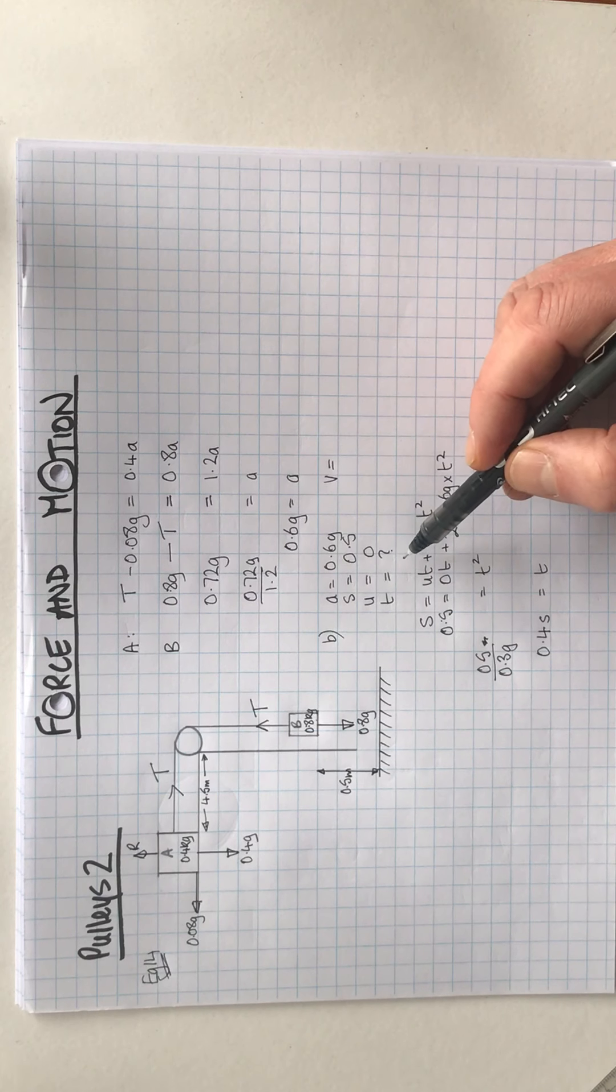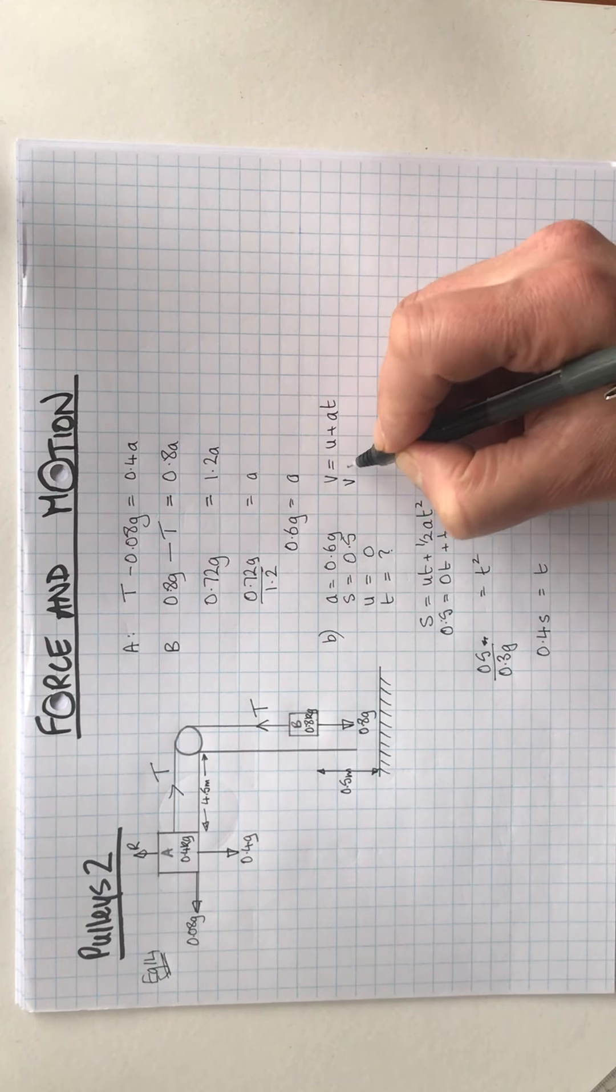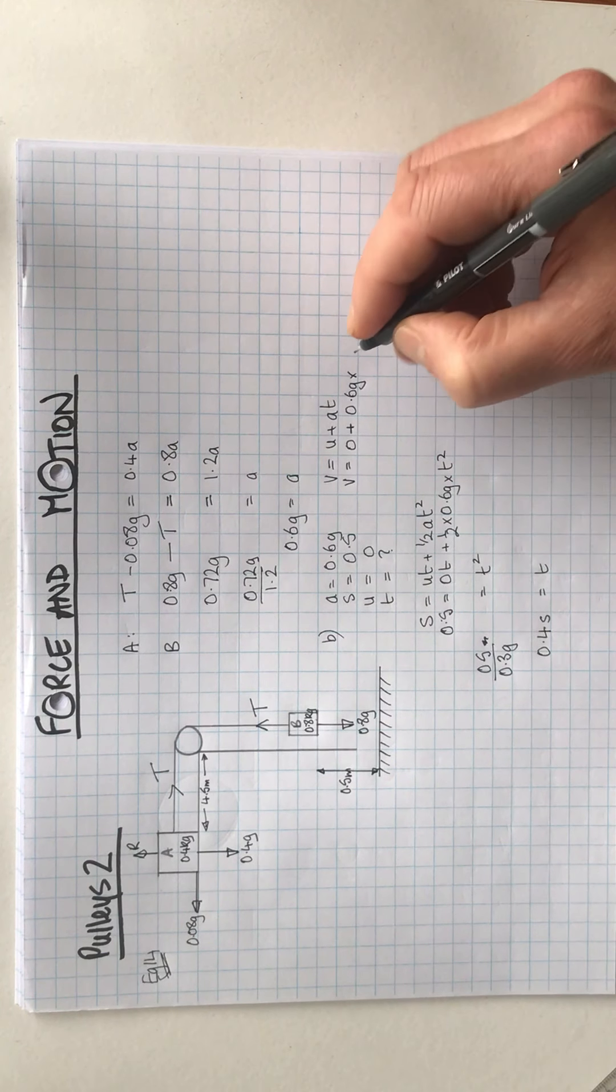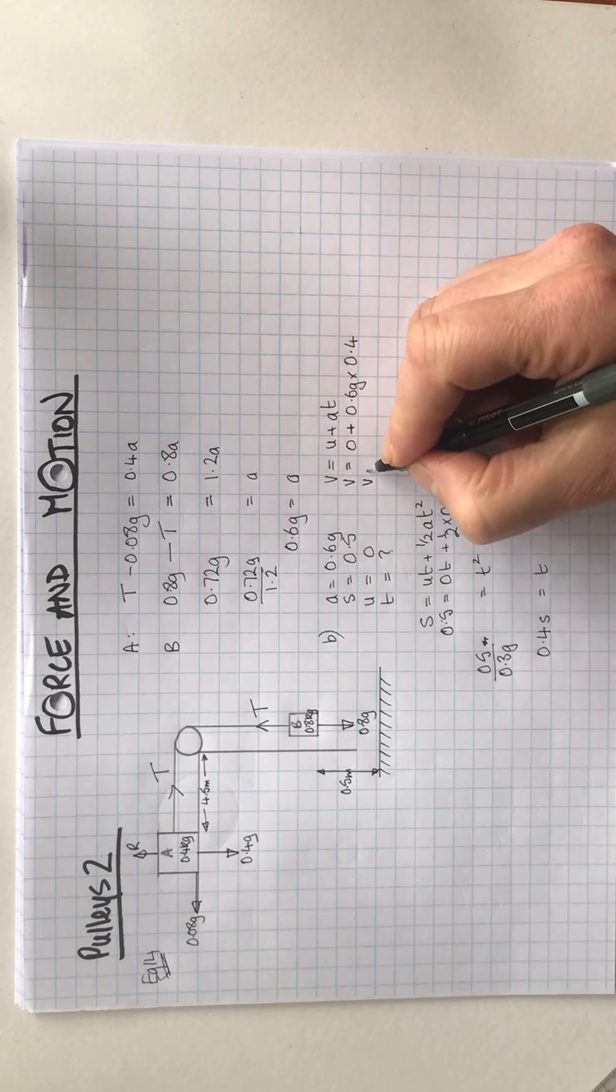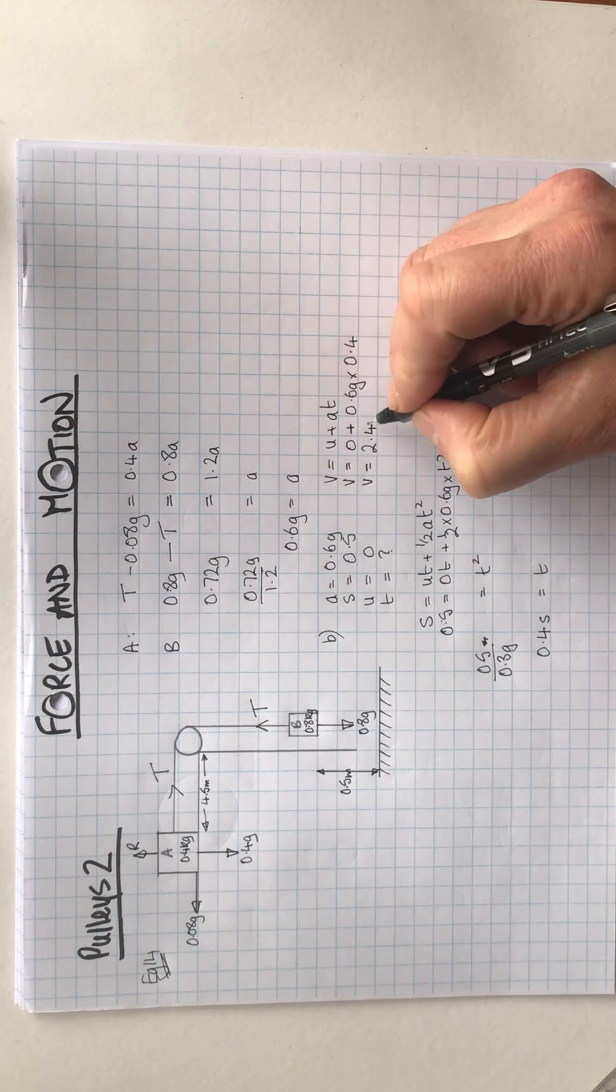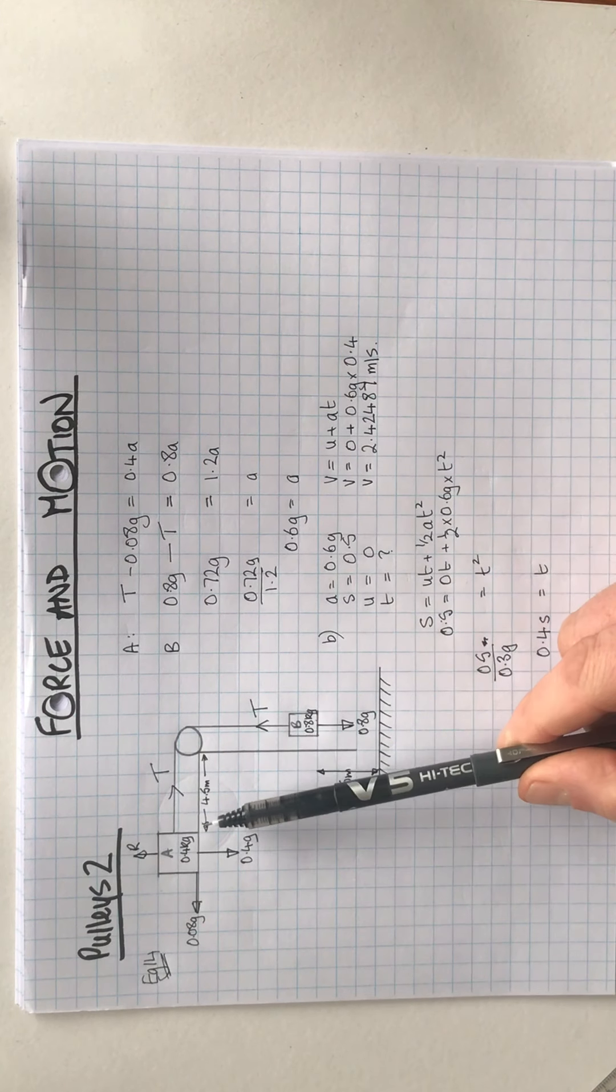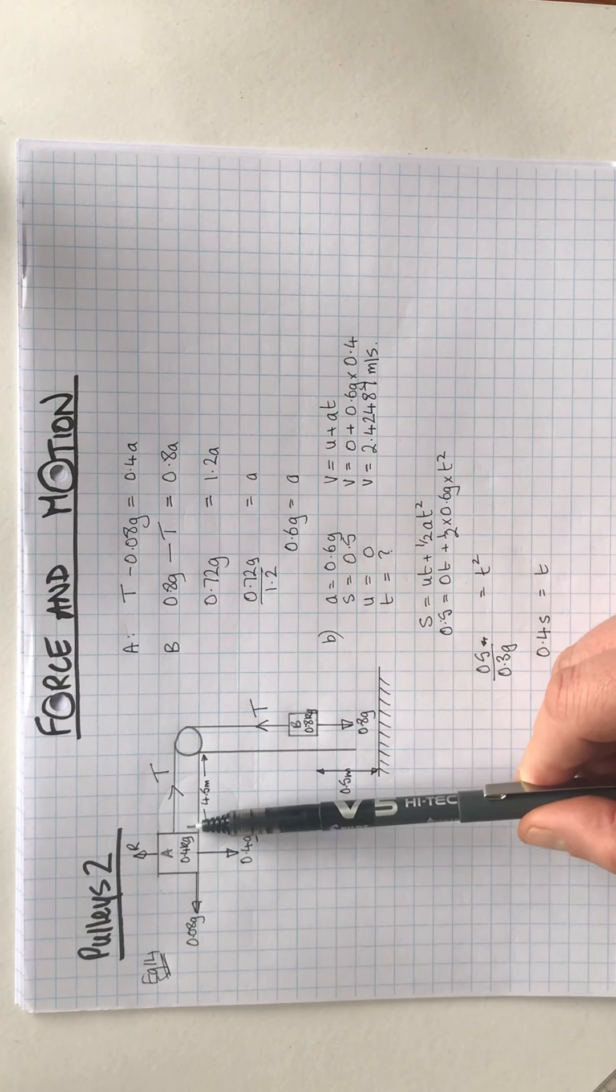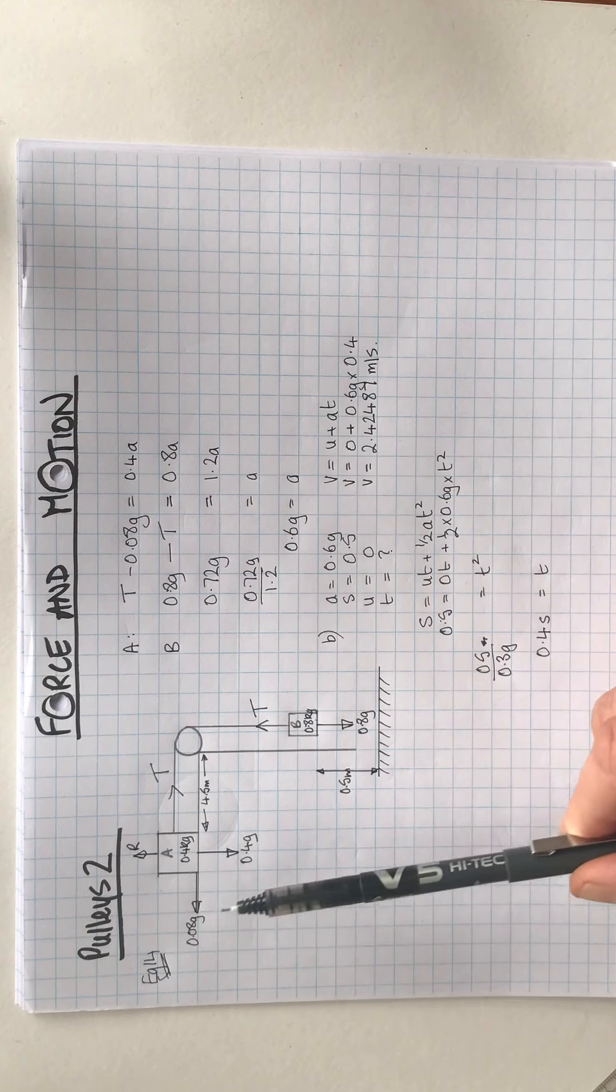So we now do need to work out V. We know that T is 0.4. We could use any of the SUVAT equations. I'm going to go with V equals U plus AT. So the final velocity is the initial velocity plus 0.6G times... I actually need the actual value, I can't have the rounded value. This is a rounded value, I need the actual value. And by magic, the velocity that we get is 2.42487 meters per second. So after half a meter, this thing is travelling at 2.42487 meters per second.